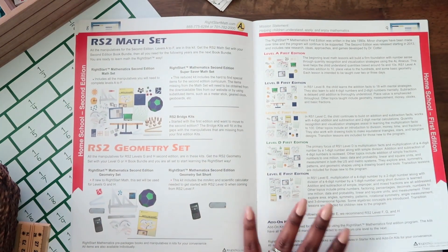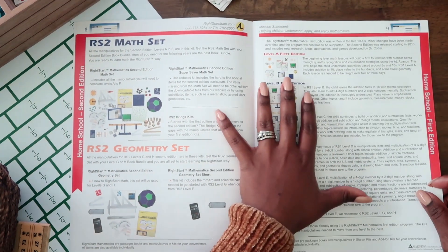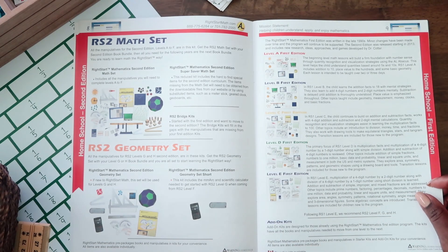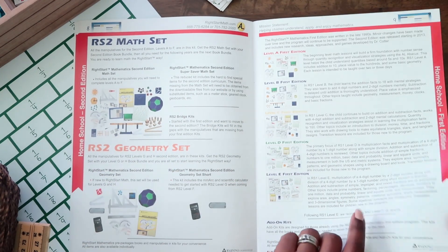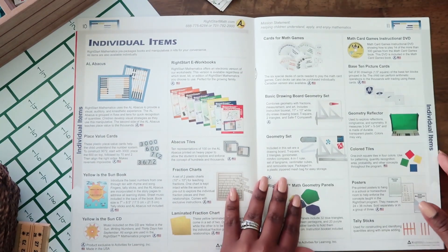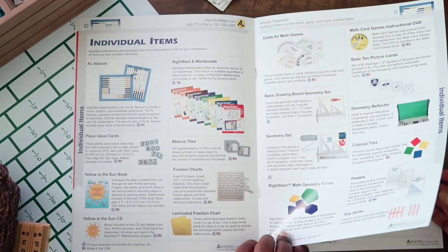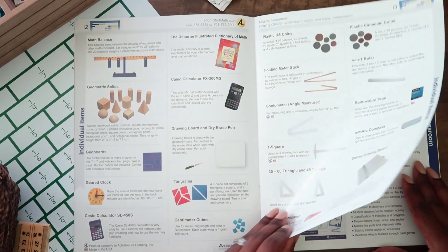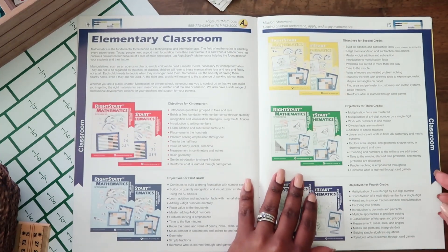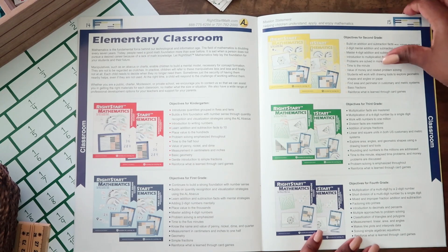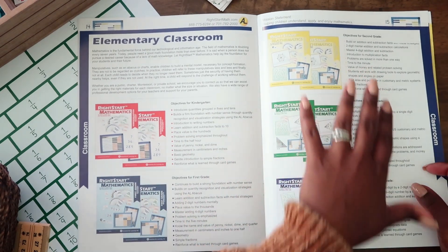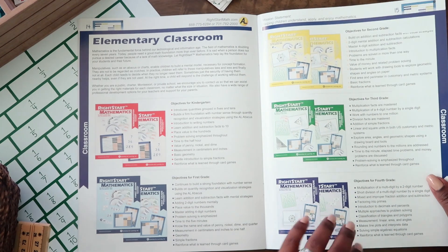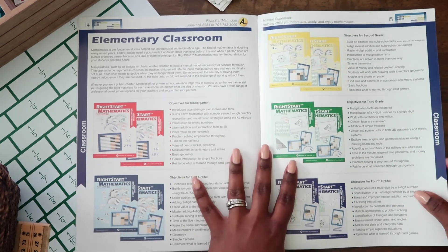These are all the math manipulatives. So if you just wanted to buy the manipulatives that you would need for each level, you can do that, or you can just go in and get the whole kit. That's what we did. These are the individual items for sale. And you can check all this out on their website. I will post, now we're in the classroom. You can see how they're breaking it down by grade and level, the levels by grade.